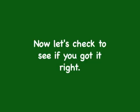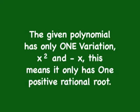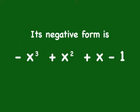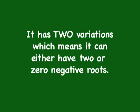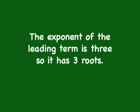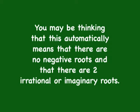Now let's check to see if you got it right. The given polynomial has only one variation, between x² and -x, which means it only has one positive rational root. Its negative form is -x³ + x² + x - 1, which has two variations, meaning it can either have two or zero negative roots.